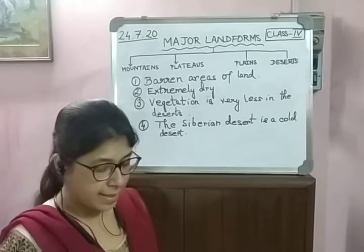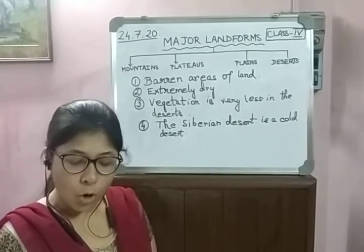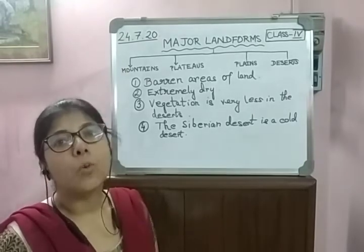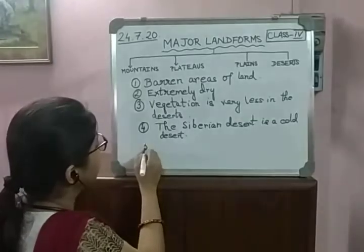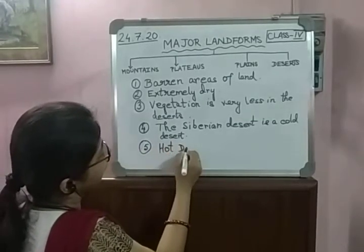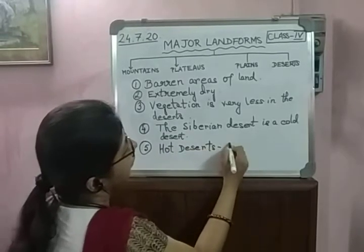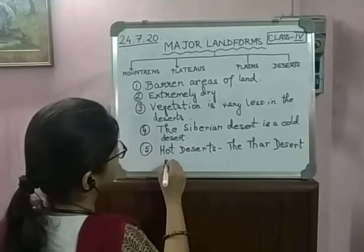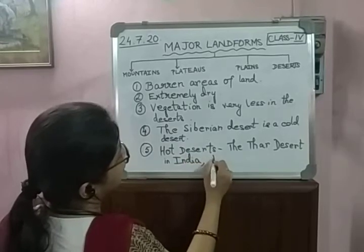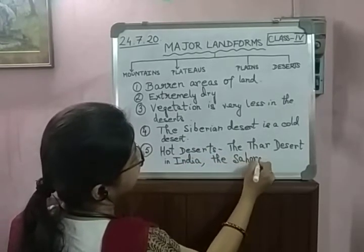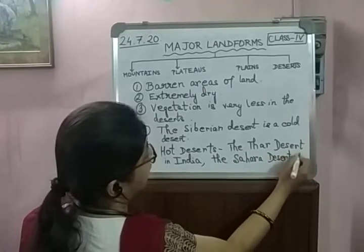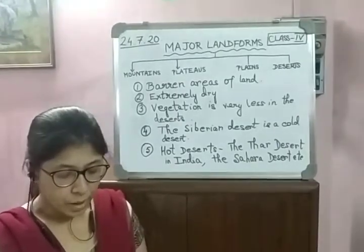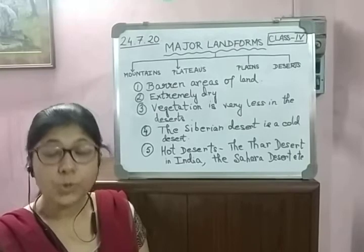Hot deserts like the Thar desert in India, the Sahara desert, and the Gobi desert are all hot, dry deserts with extreme temperatures. The days are extremely hot while at night the temperature falls rapidly.